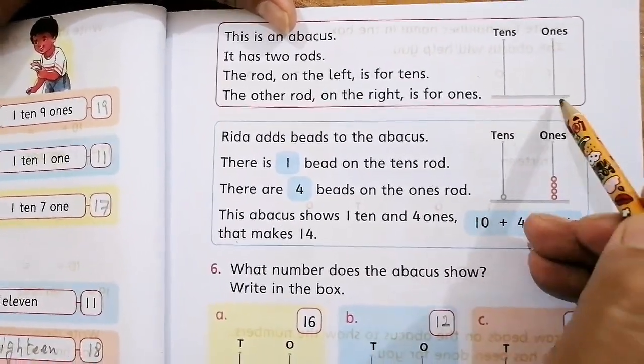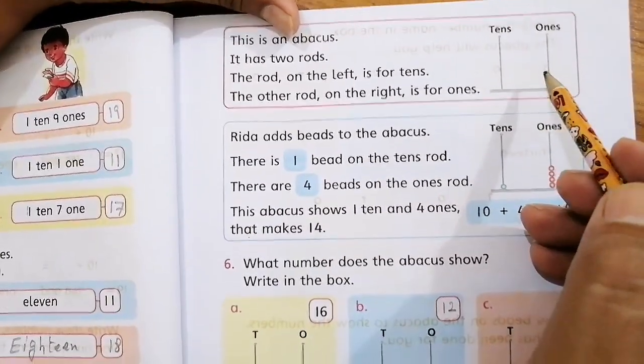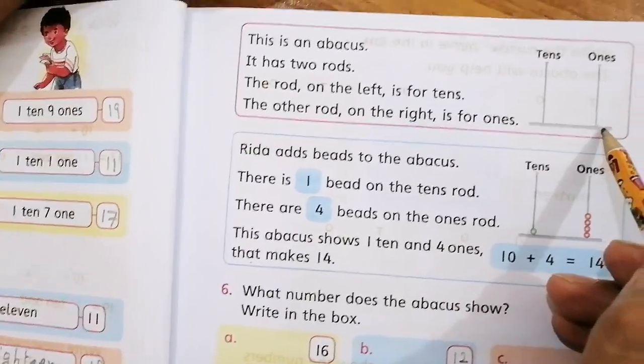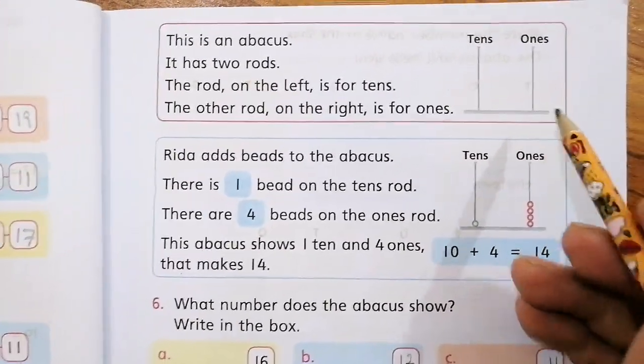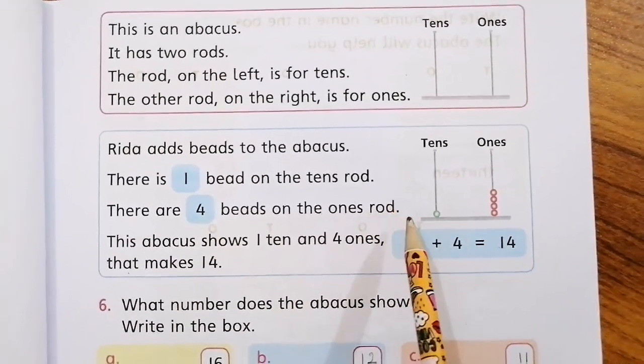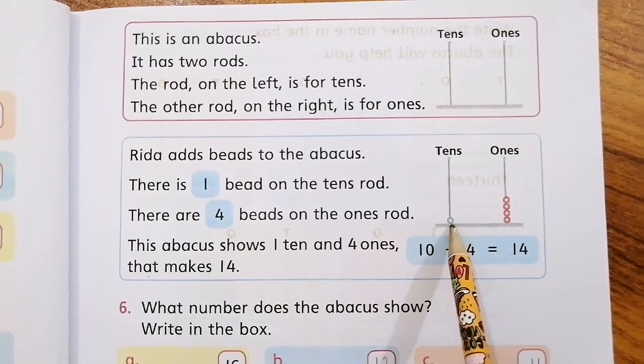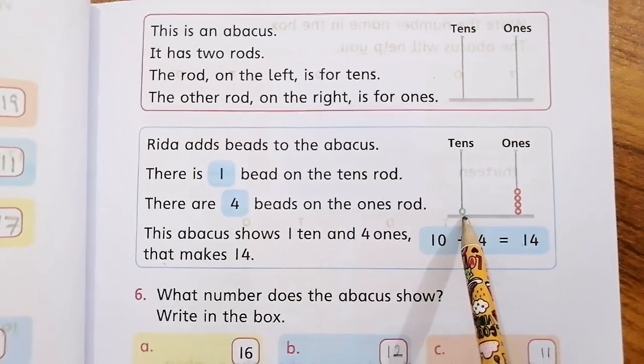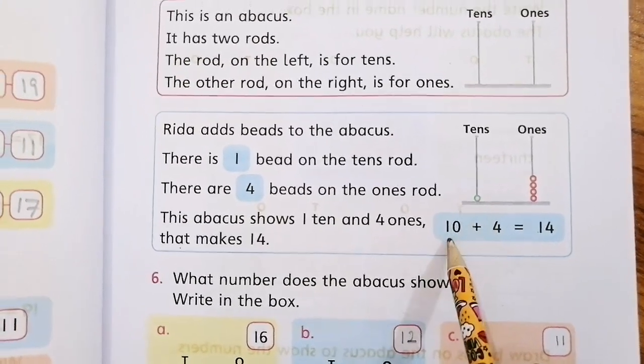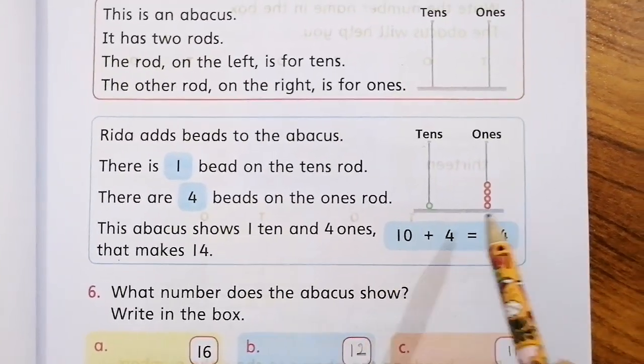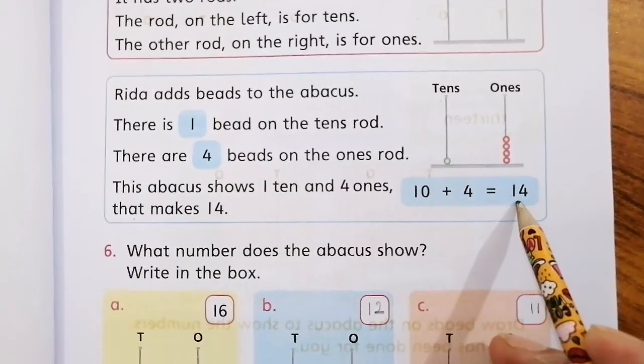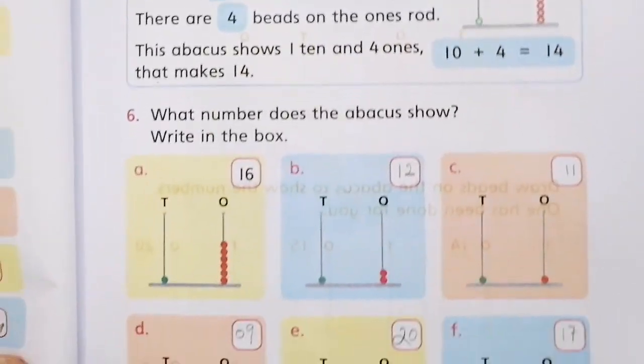You can use the abacus as well. You can also use two sticks and put beads on them. So this abacus is given. You can see this one bead is blue or green and these are four red beads. So this one bead is on the tens place, and on the ones place there are four beads. So ten plus four is fourteen. This is your answer.